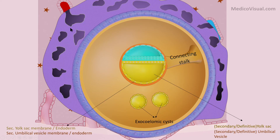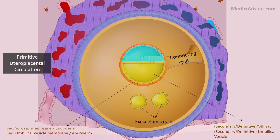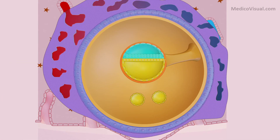Blood starts flowing within this interconnected lacunar network from the maternal arteriole to the maternal venule, and this is called primitive uteroplacental circulation. Finally, finger-like projections arise from the cytotrophoblast, and these are called primary villi.